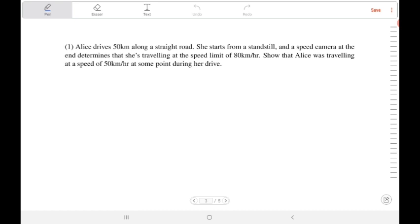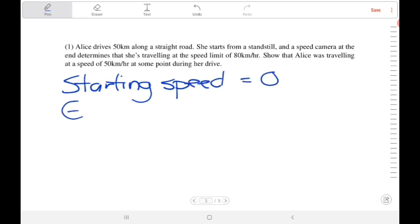Alice is driving 50 kilometers along a straight road. She's not moving at the beginning. That's a key point. The starting speed is zero, and the end speed, according to the speeding camera at the end, is 80.